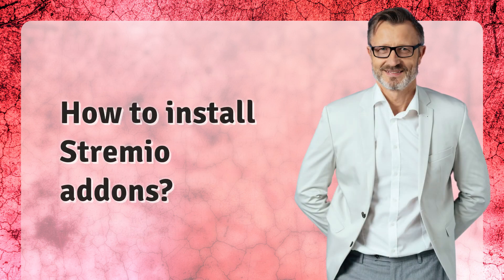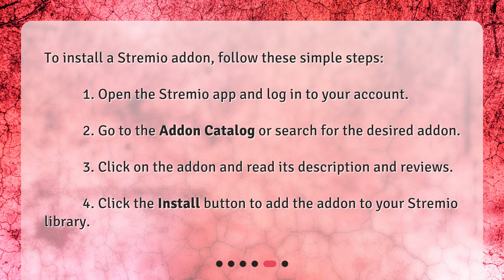How to install Stremio add-ons? To install a Stremio add-on, follow these simple steps. First, open the Stremio app and log in to your account. Second, go to the add-on catalog or search for the desired add-on. Third, click on the add-on and read its description and reviews. Fourth, click the install button to add the add-on to your Stremio library.